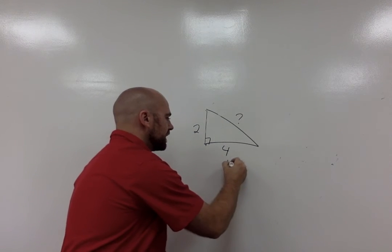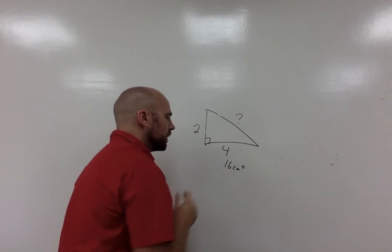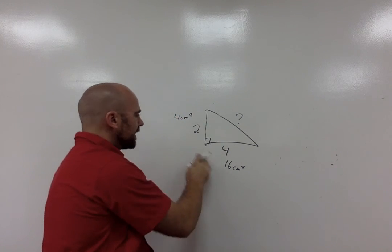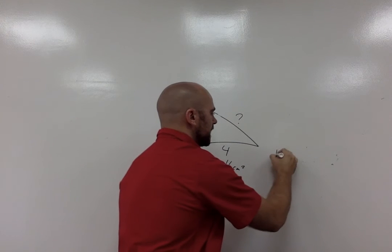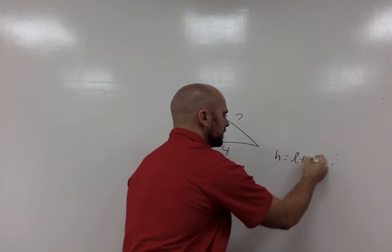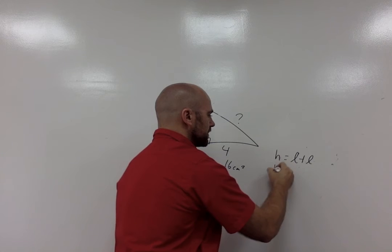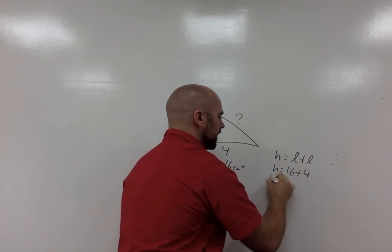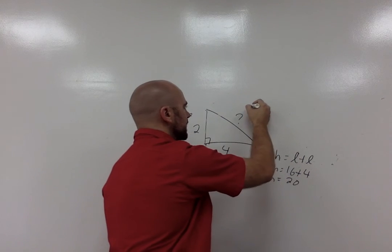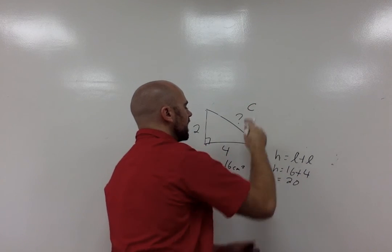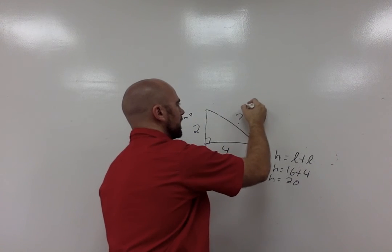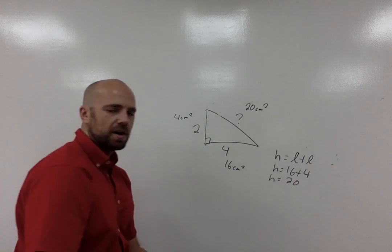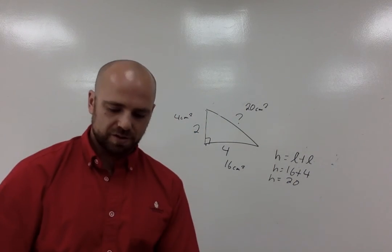What would the area of this one be? It would be 4 times 4, so that would give me 16 centimeters squared. This one is 2, so that would give me 4 centimeters squared. Then I add these two together. My hypotenuse equals my length plus my length, the areas. So it equals 16 plus 4. My area of my hypotenuse equals 20. The area of this square is going to be 20 centimeters squared if I was to draw the squares over top of each of them.